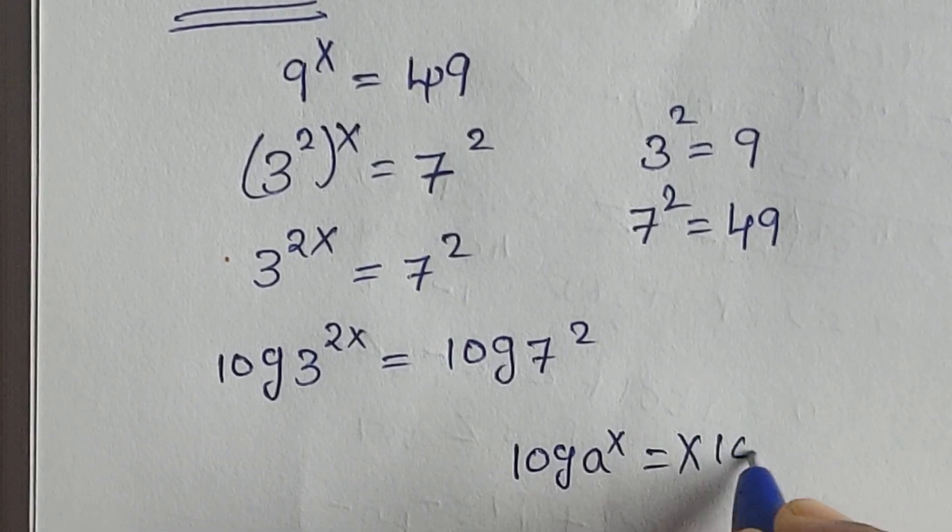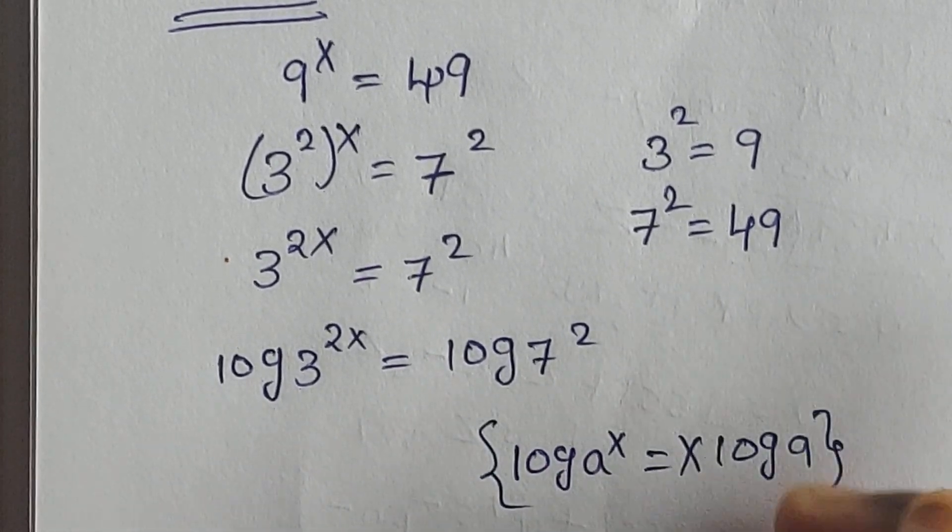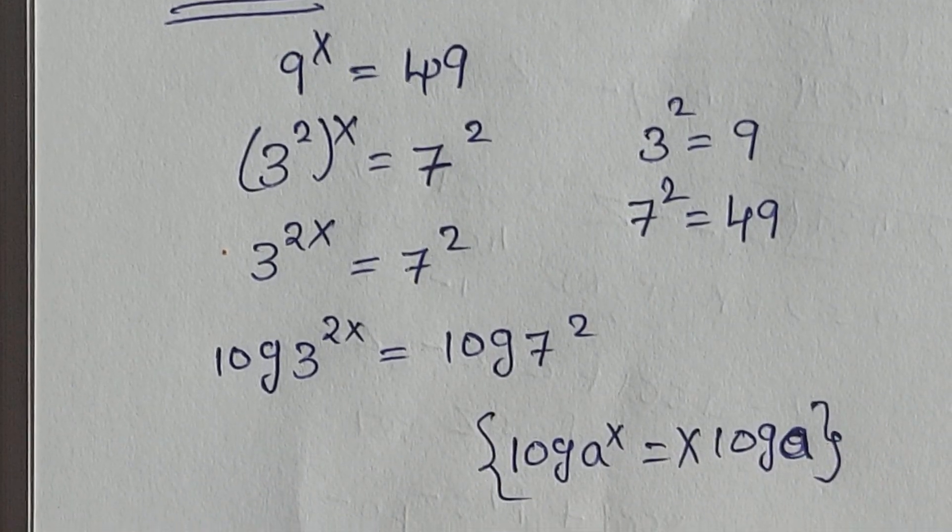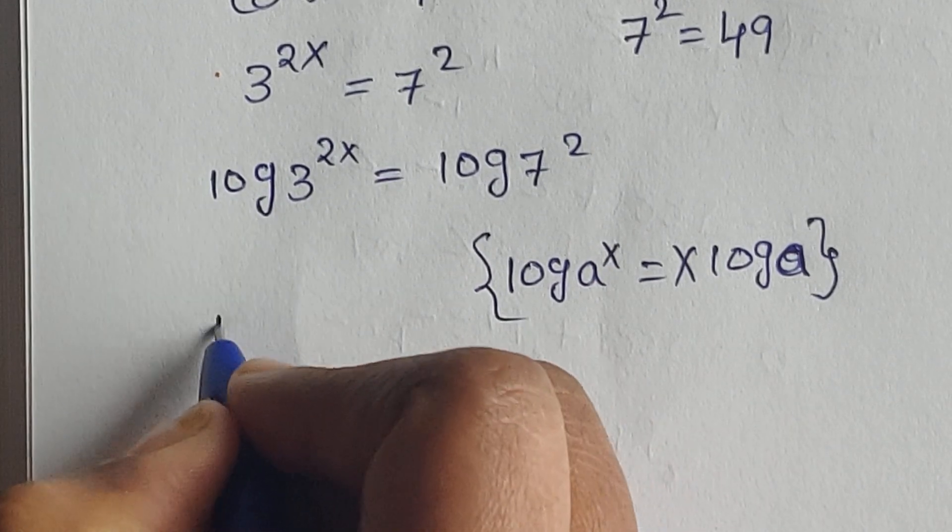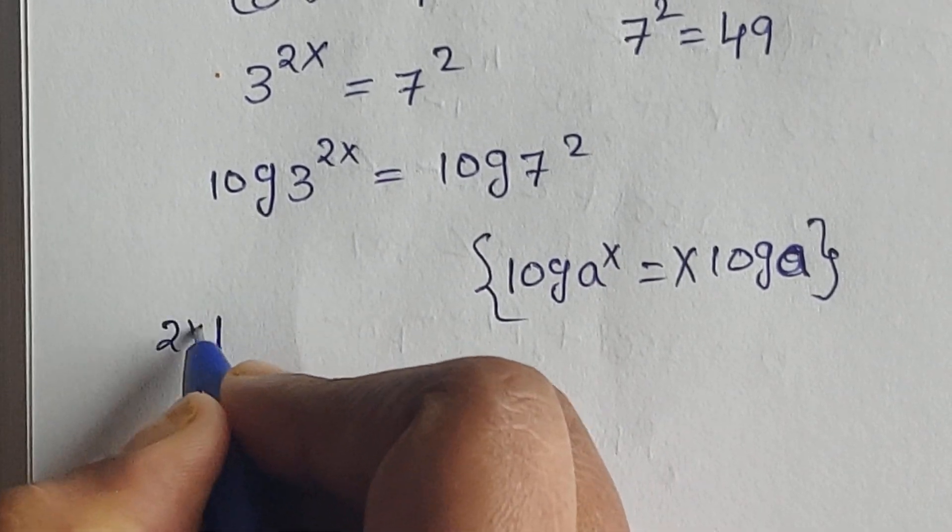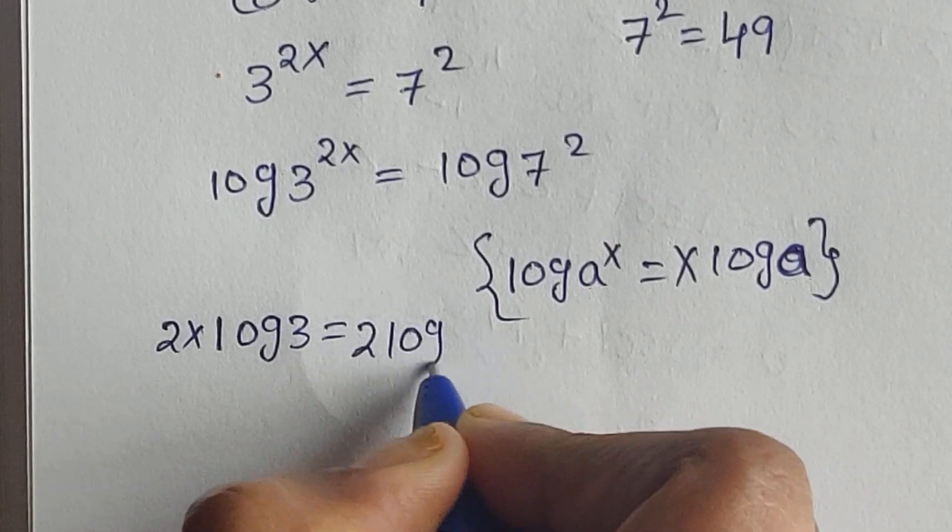So here using this formula, we can write 2x log 3 equals 2 log 7.